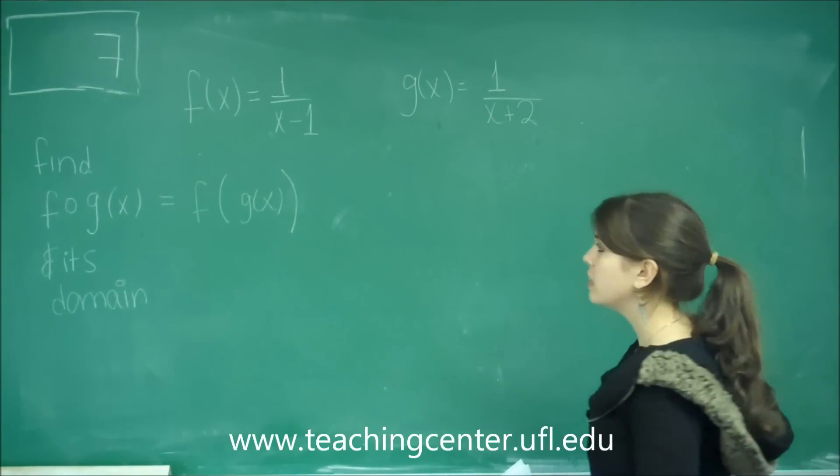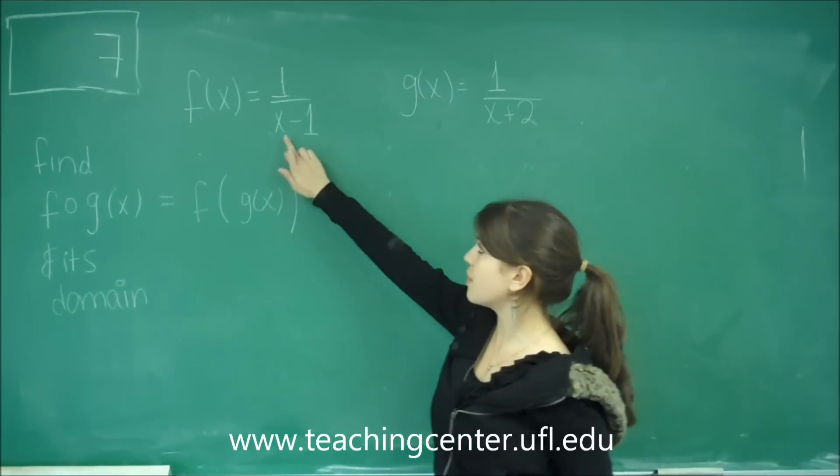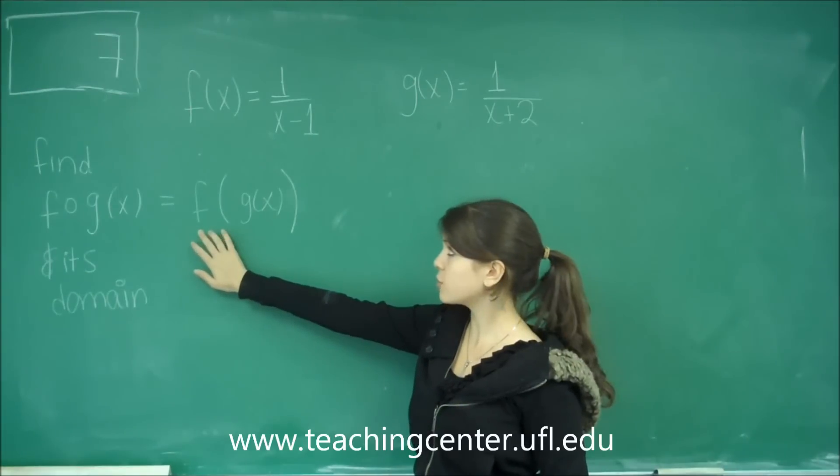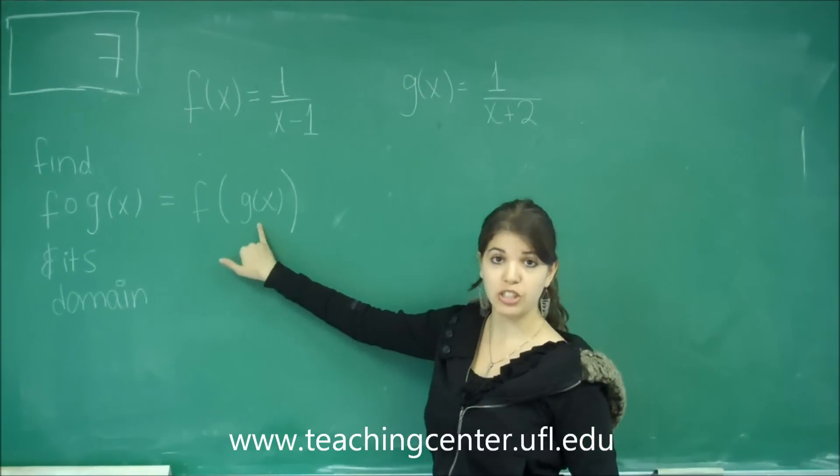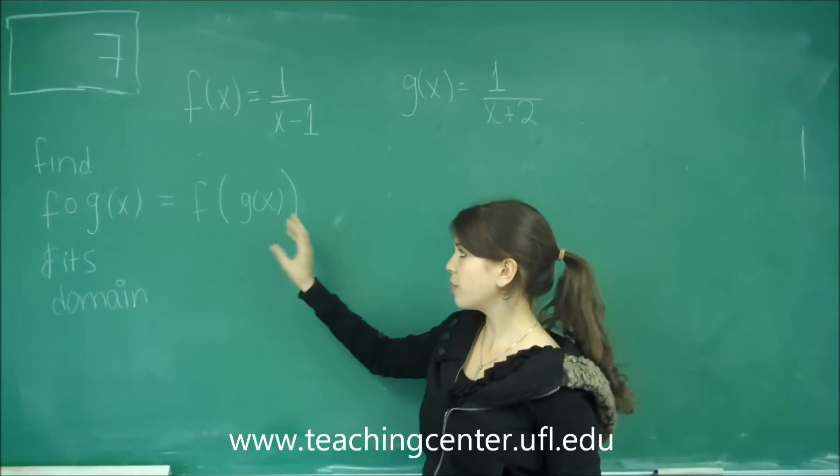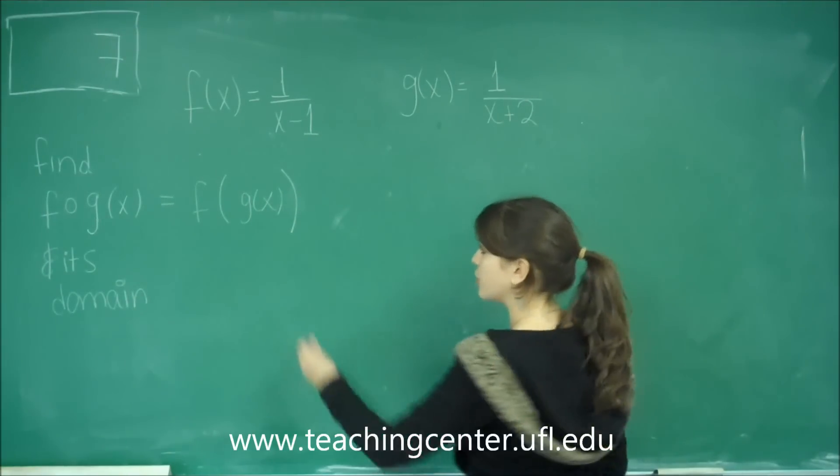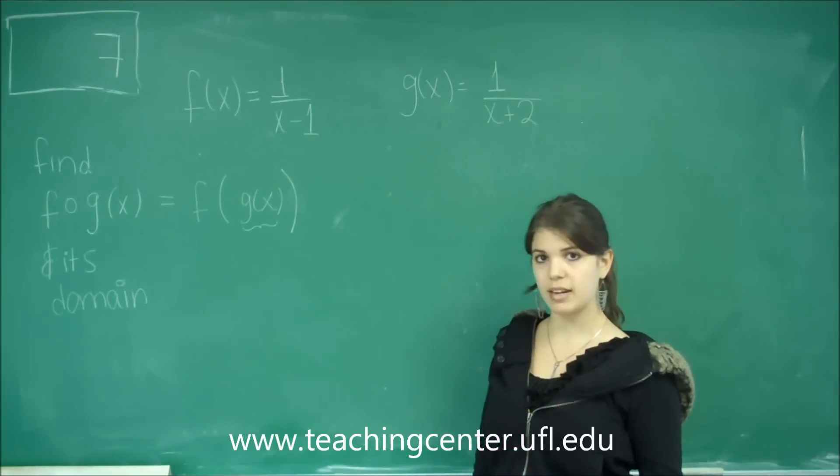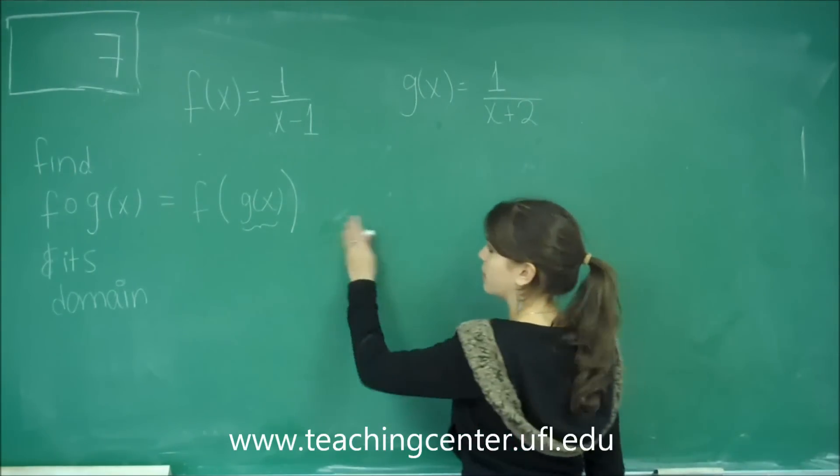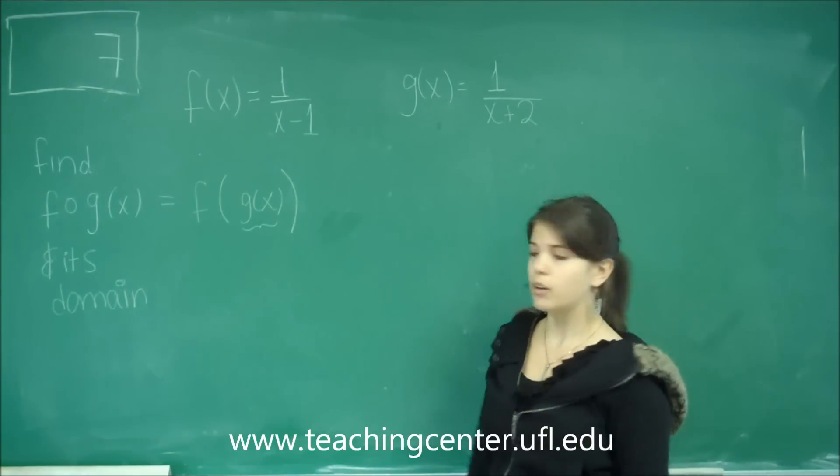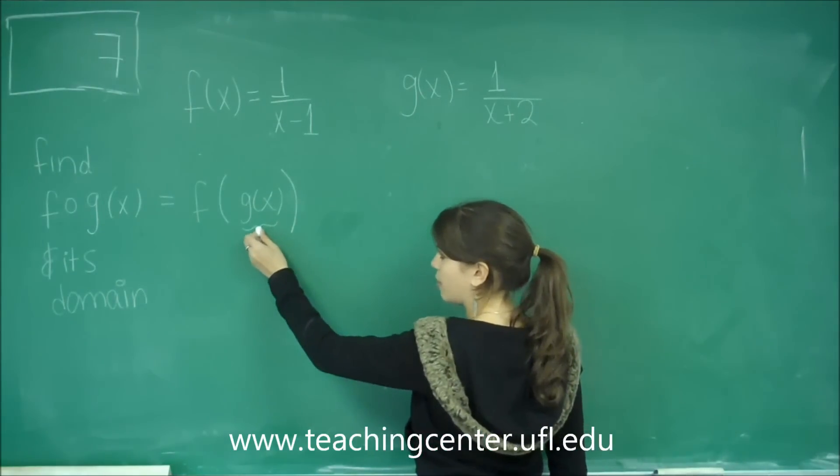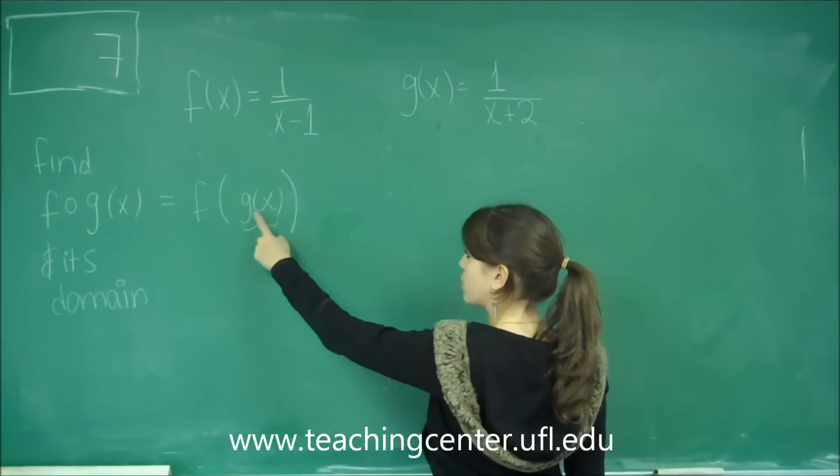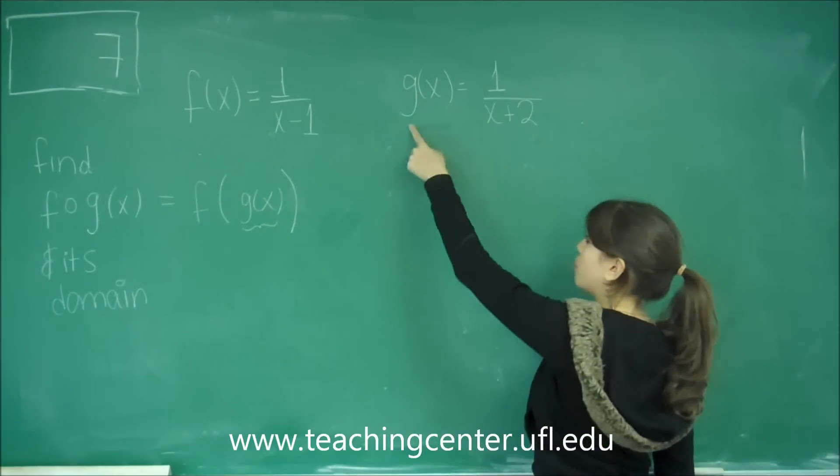We're going to assume that the x value for the outer function which is f is equal to g of x. So let's work from the inside out. G of x we know. The concept of working from the inside out is mostly helpful if instead of this being an x it's a number. We see that g of x is exactly what we've been given here.